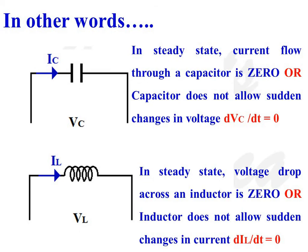In steady state, current flow through a capacitor is zero, or the capacitor does not allow changes in voltage, meaning dVc/dt is equal to zero. Similarly, in the case of an inductor in steady state, voltage drop across the inductor is equal to zero, as the inductor does not allow any sudden changes in current, meaning dIL/dt is equal to zero.